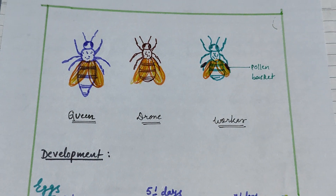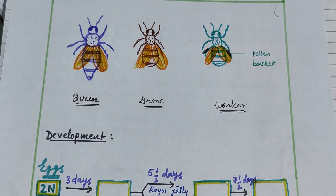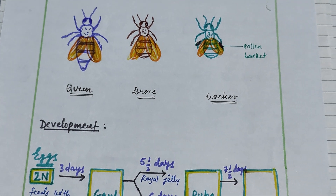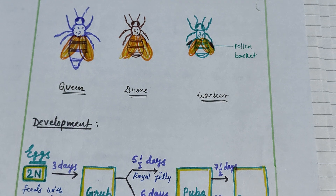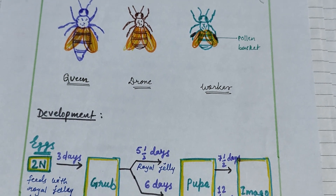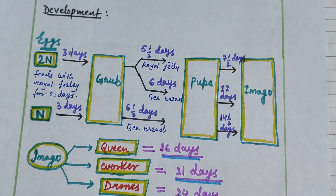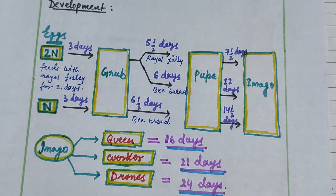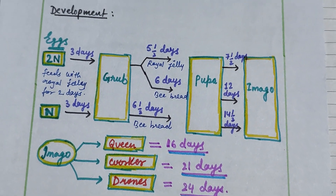As the figure describes, the queen is the largest in size, drones are middle-sized, and workers are the smallest. Workers have a pollen basket on their hind legs. Development includes two types of eggs: diploid and haploid. After three days, a grub larva is formed.